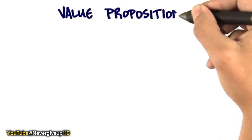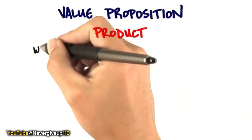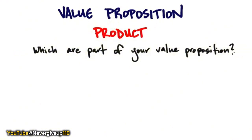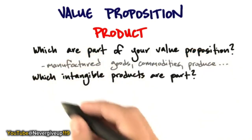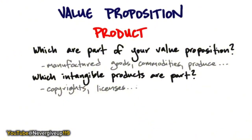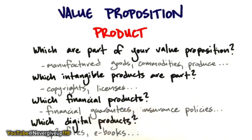Let's look at the value proposition in more detail and expand on those three components. The first one is your product. You need to understand which parts are part of your value proposition — is it just hardware or software or bits? Or are there going to be some manufacturing goods, some commodities? Are you going to have intangible products — copyrights and licenses? Financial products like guarantees, insurance policies, or maintenance contracts? Or digital features as well? The point is to realize that your product and service is not just the bits or hardware — it's the whole product, the entire package you're going to be delivering.